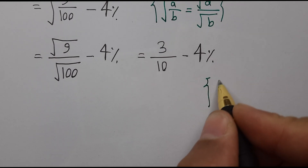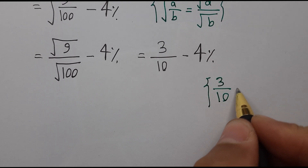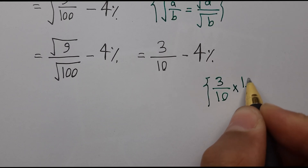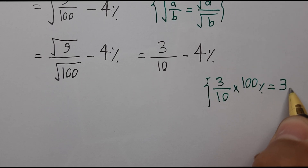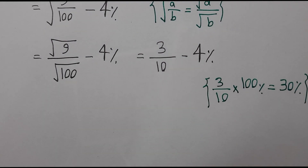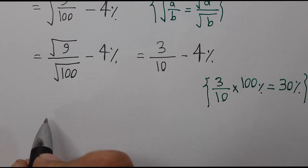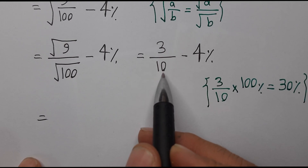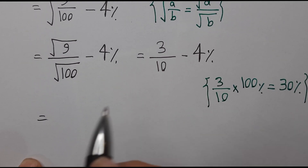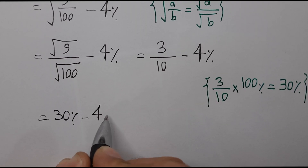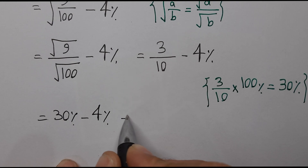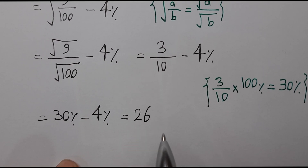So three over ten times one hundred percent is thirty percent. Now we can write three over ten as thirty percent, and we have minus four percent, so our result is twenty six percent.